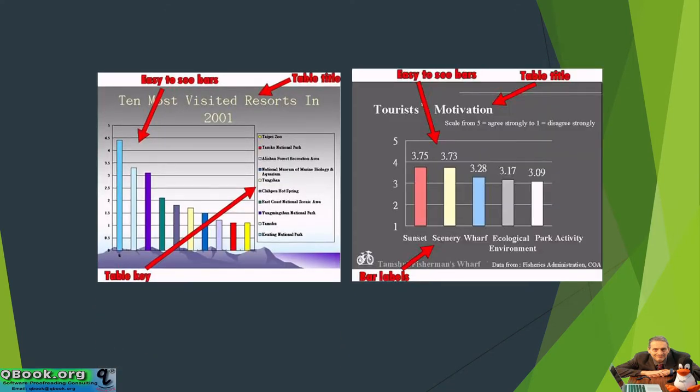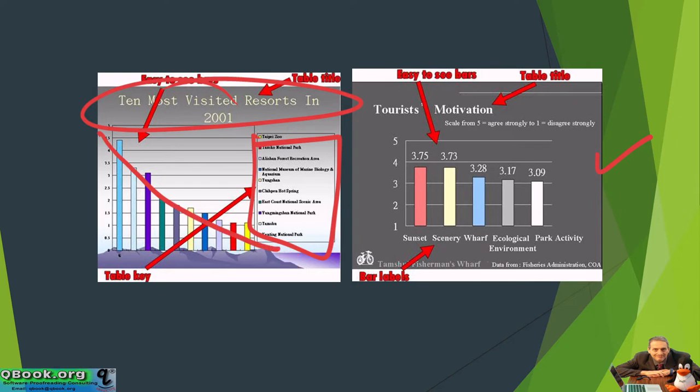A couple more examples. I would prefer the background. I like this one a little bit more. I like this one a little bit less, but it's not too bad. It's kind of a gray background. We have the title of the graph. We have the key to the graph, and then we have our bar chart very clearly.